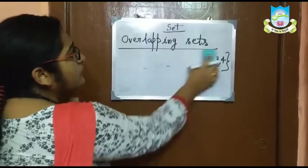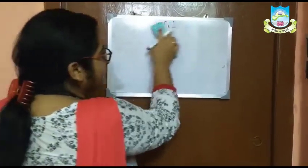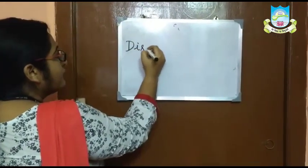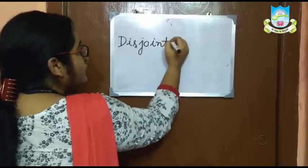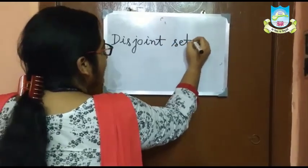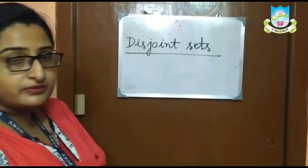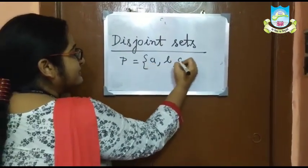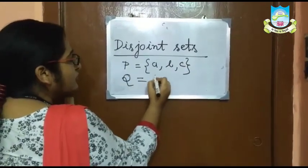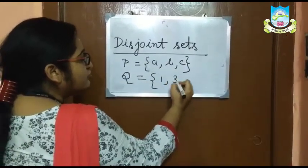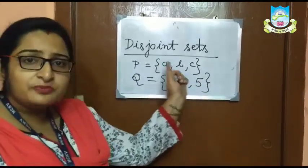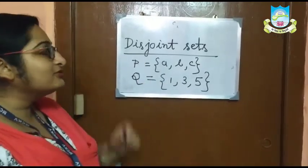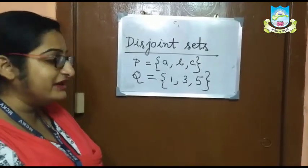Now we will learn about disjoint sets. Disjoint sets are those sets which do not have any element in common. For example, set B has the elements A, B and C, and set Q has the elements 1, 3 and 5. Since set B and set Q do not share any element, these two sets are known as disjoint sets.